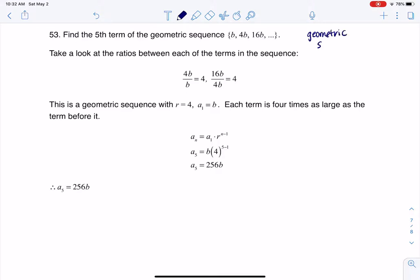Whenever I hear geometric sequence, two pieces of information that are always nice to have are r, the common ratio, and a₁. Based on what they gave me, I can see a₁ right here equals b, so that's great. I have that aspect.